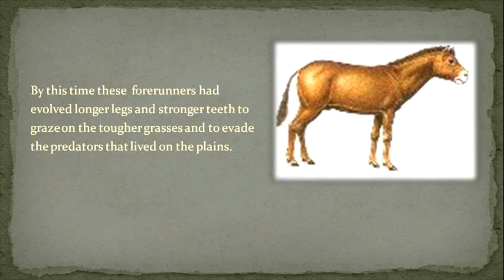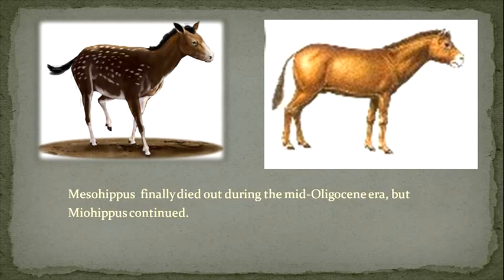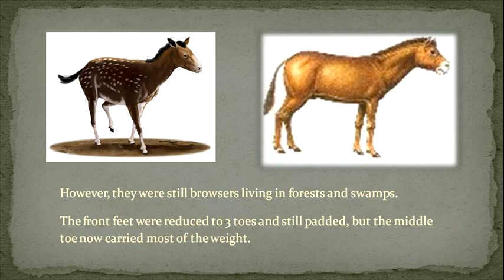By this time, the forerunners had evolved longer legs and stronger teeth to graze on the tougher grasses and to evade predators that lived on the plains. There were as many as three species of Mesohippus and two species of Miohippus that existed at the same time, overlapping 40 million years. Mesohippus finally died out during the mid-Oligocene era, but Miohippus continued. Both of these mammals were now about the size of a German Shepherd, taller and heavier, with teeth that allowed them to eat a wider variety of plants.